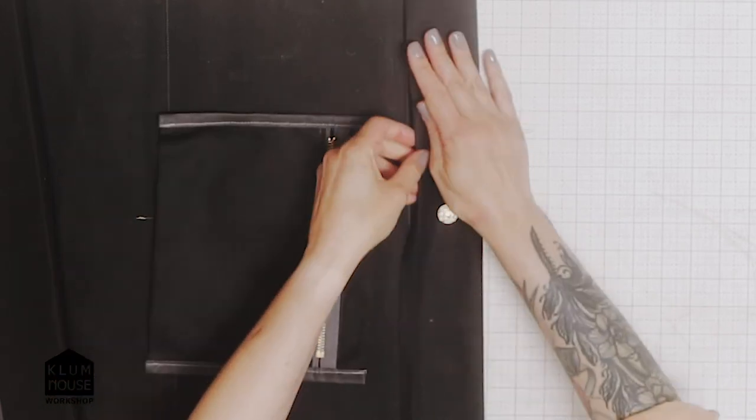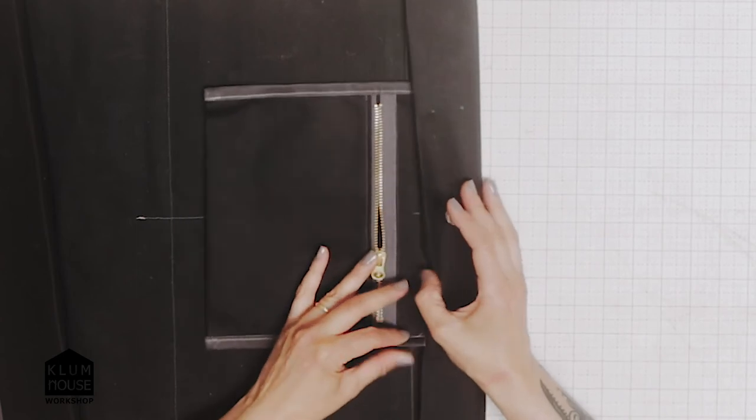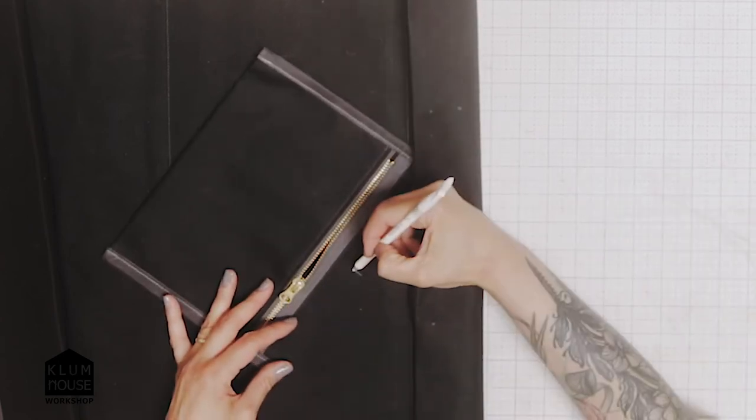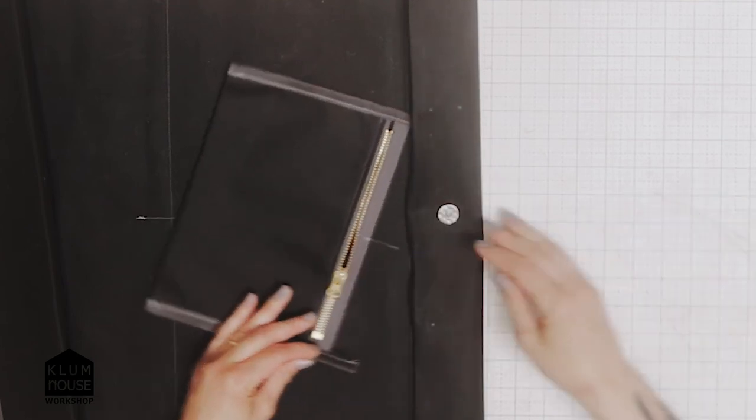Then I can place that into the hem. When I'm placing this into the hem, I'm going to carry my halfway mark a little bit lower so I can still see it when I place it in.